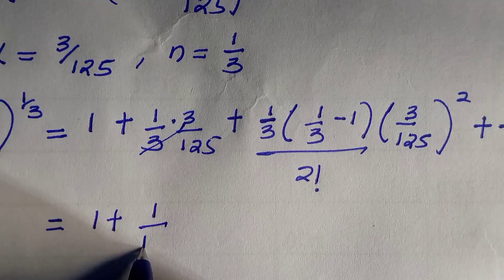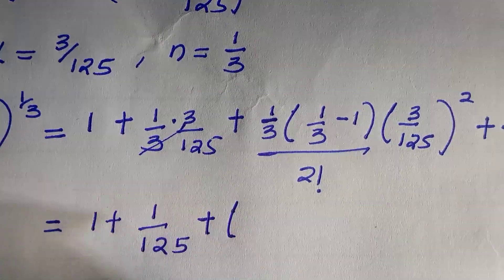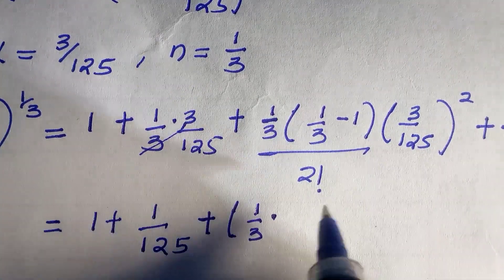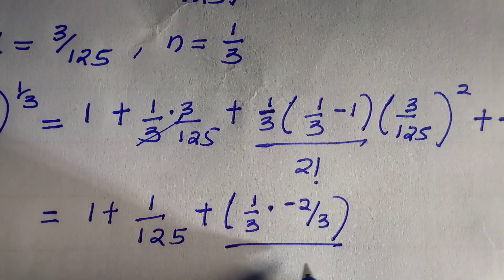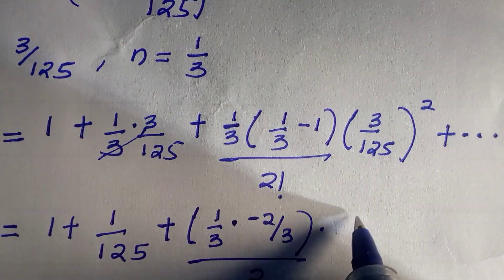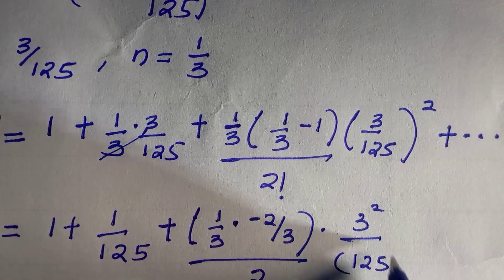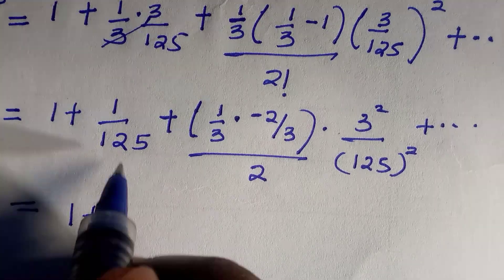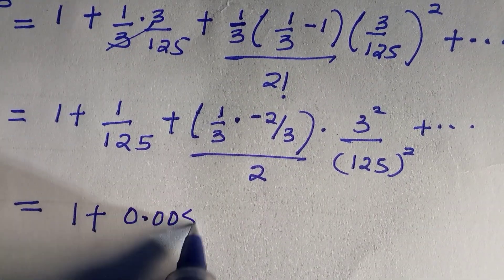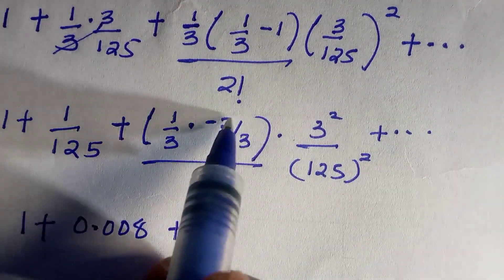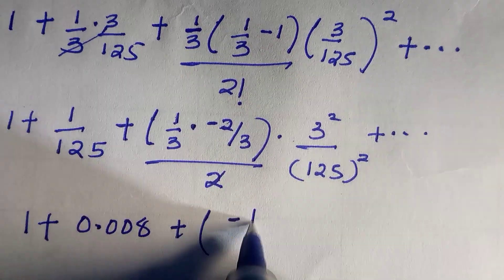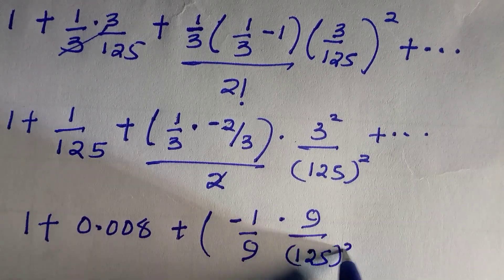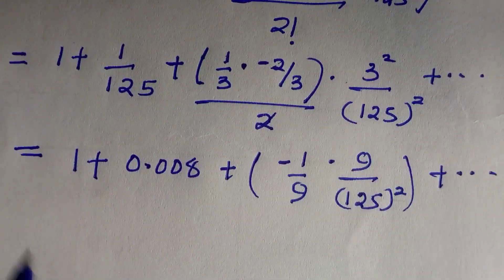Expanding gives: 1 + 1/125 + then for the second term, (1/3)(−2/3) divided by 2, multiplied by 9 divided by 125 squared. The two cancels, leaving −1/9 times 9/125², which simplifies further.